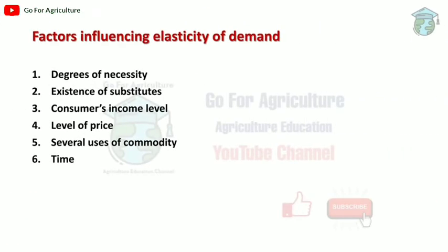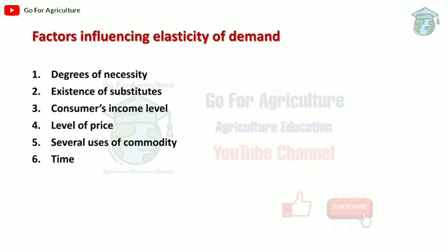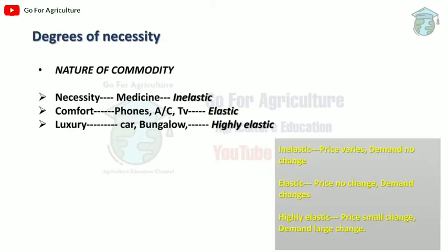The factors influencing elasticity of demand are: degree of necessity, existence of substitutes, consumer's income level, level of price, several users of a commodity, and time. Let's take each one by one. The first is degree of necessity.